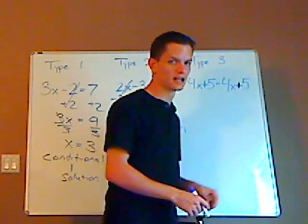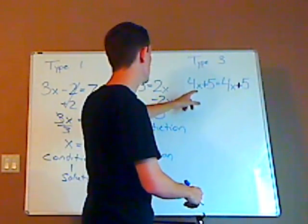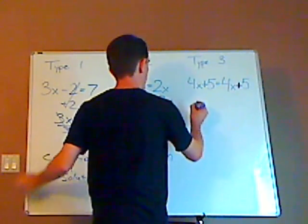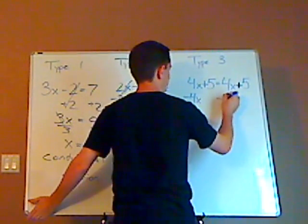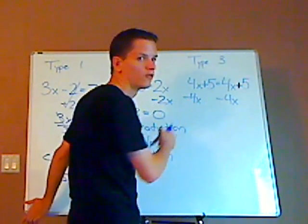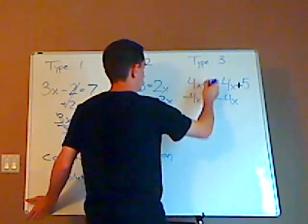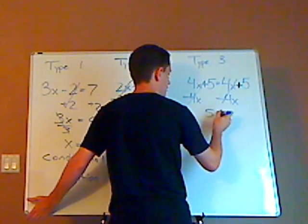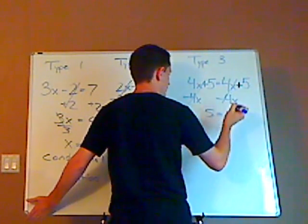Now, let's look at type number three. I'm gonna subtract both sides by four x. When I do that, the four x's cancel out. So that cancels, that cancels. That leaves me with five equals five.